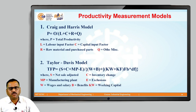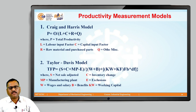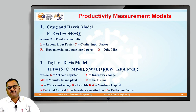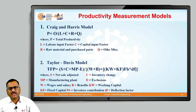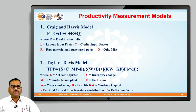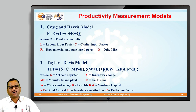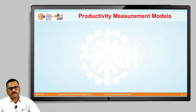To generate that particular output, we use different inputs. W represents wages and salary, B represents benefits provided to workers, KW is working capital, and KF is the fixed capital already provided. FB is the investors' contribution, and DF is the deflection factor by which we multiply that term. Through this, we come to know that the Taylor and Davis model focuses on total factor productivity.